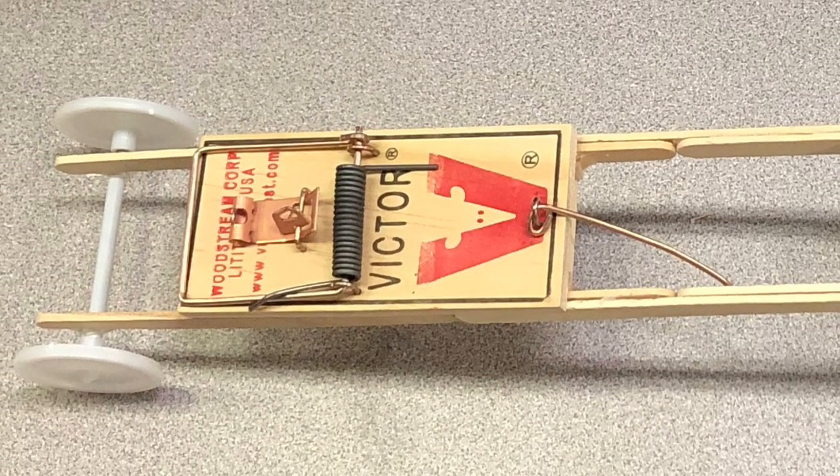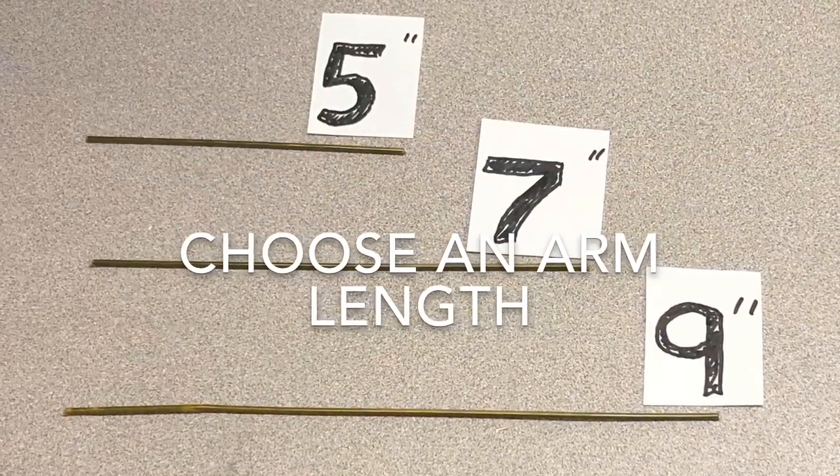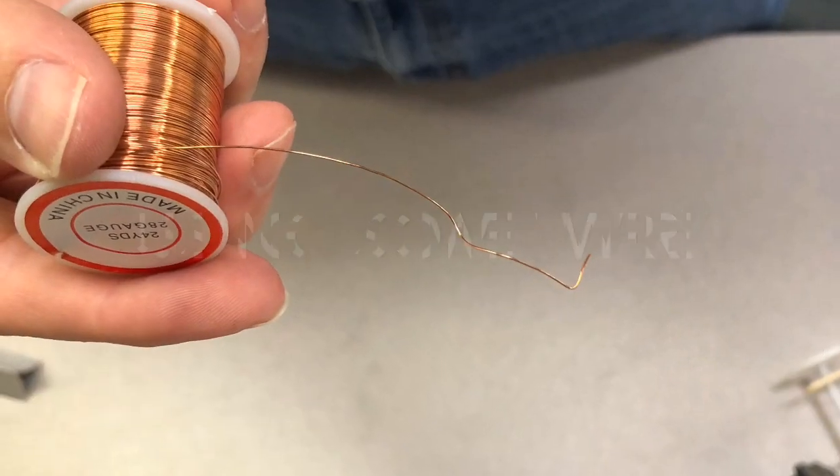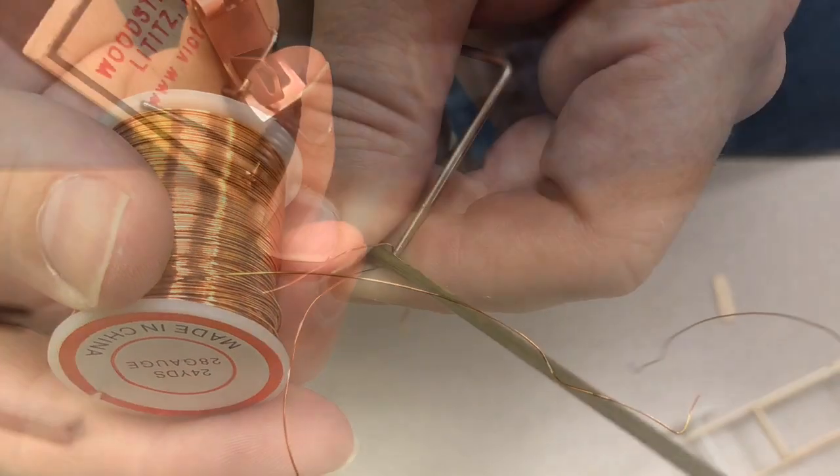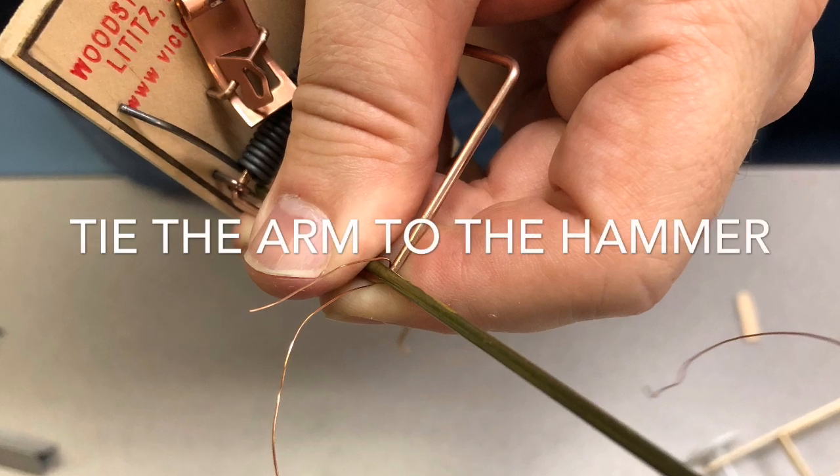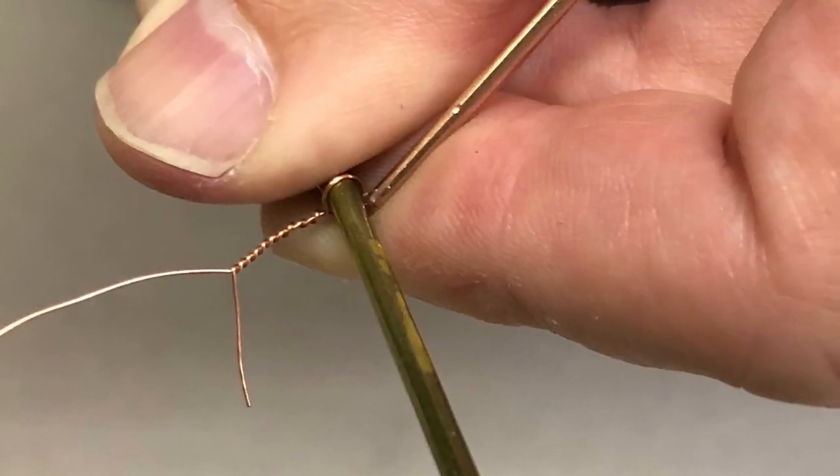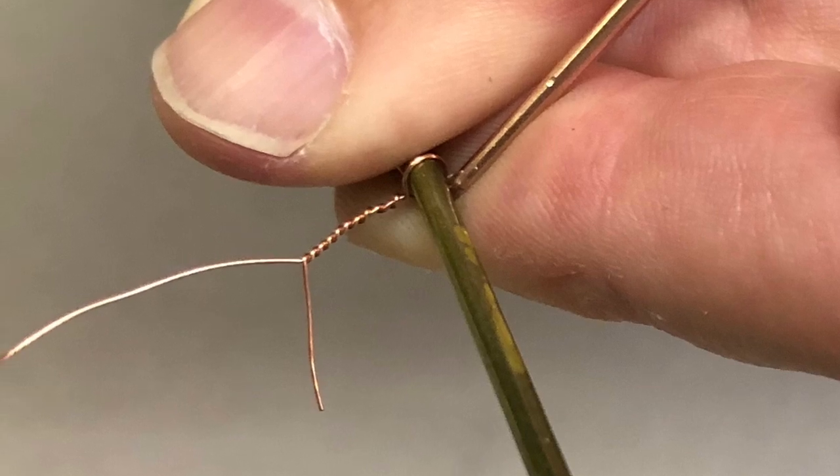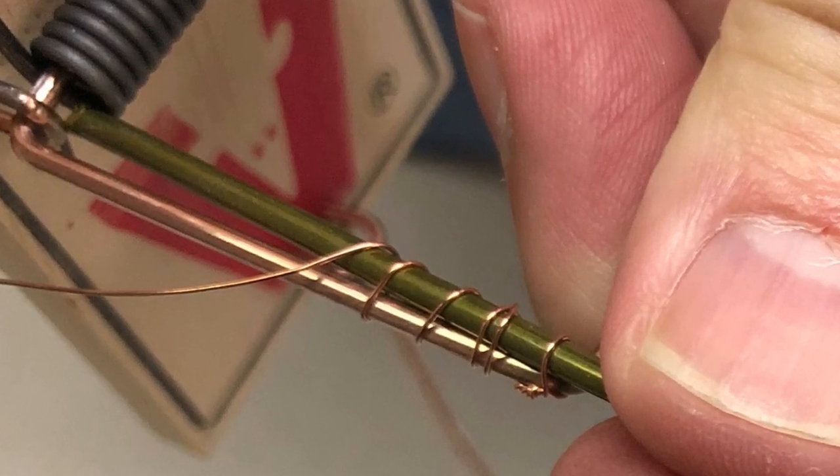Use the little piece of wire to tie the hammer and the arm together. Twist it around just like you would if you were tying up a trash bag, and wrap the wire all the way up and down the hammer and the arm, tying it together as tight as possible.